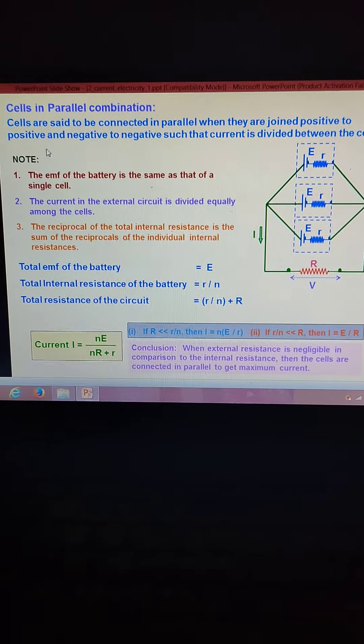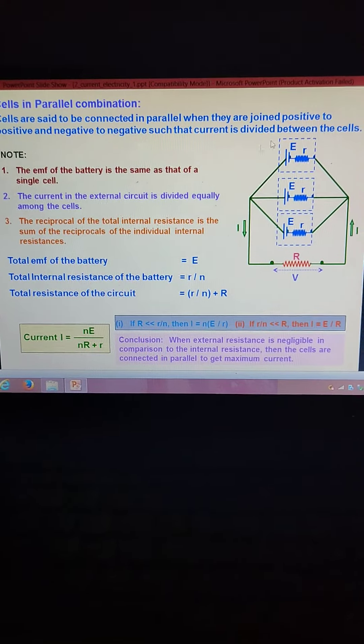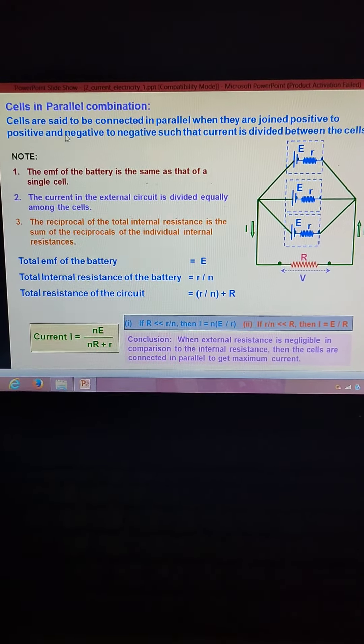Cells in parallel combination are said to be connected in parallel when they are joined positive to positive and negative to negative.